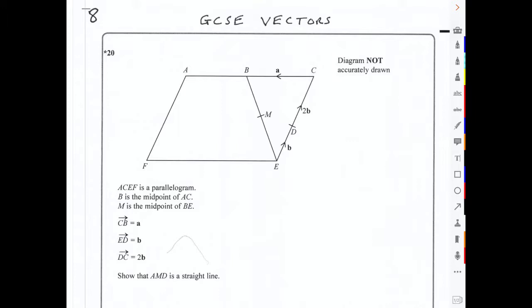Now the way to show that AMD is a straight line is to show that the vector AD is a multiple of the vector AM. So let's draw them on. There's the vector AM. And the vector AD we're saying is the same vector, only longer. One's a multiple of the other. Showing that one vector is a multiple of another shows they're parallel. But if they both go through the point A, not only are they parallel, they're the same line.